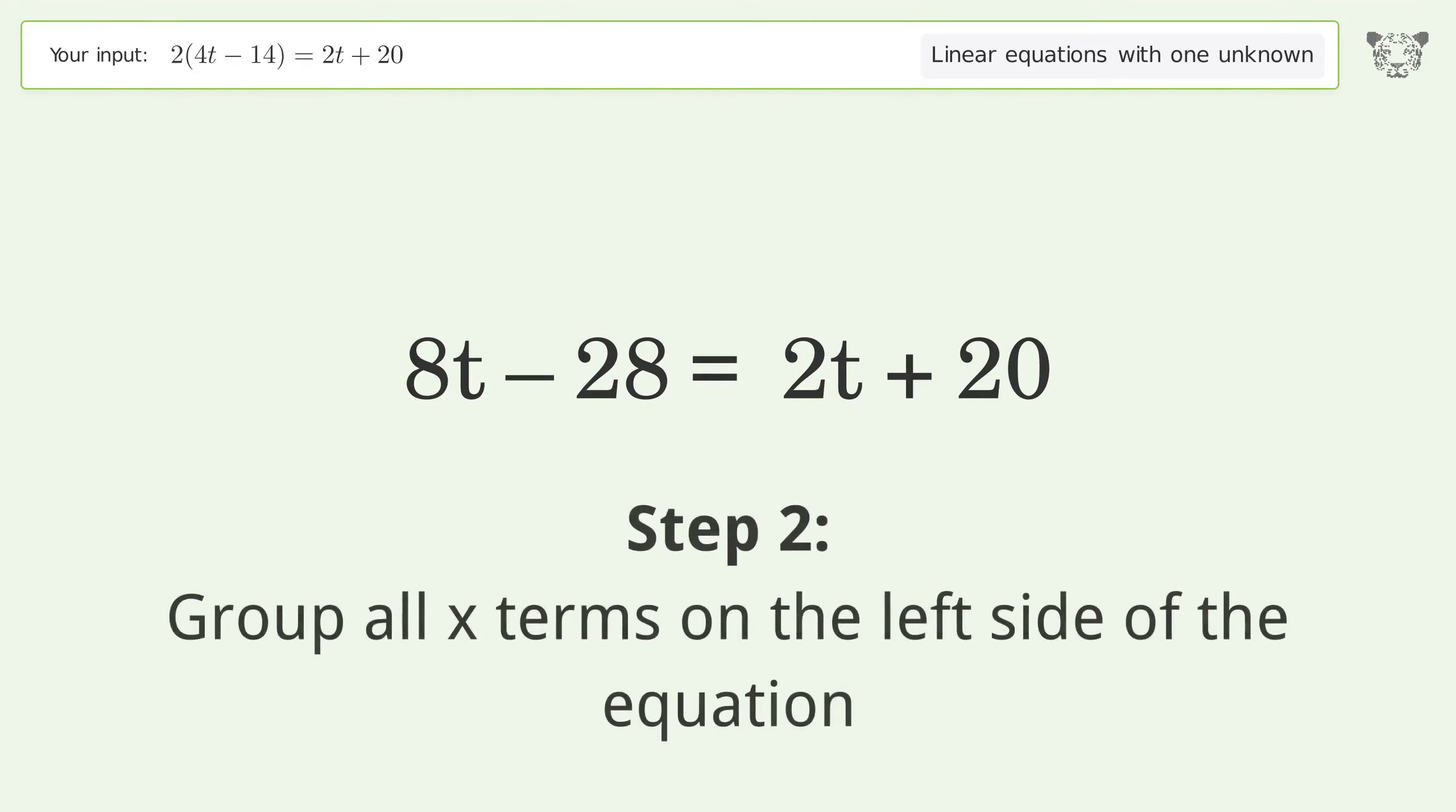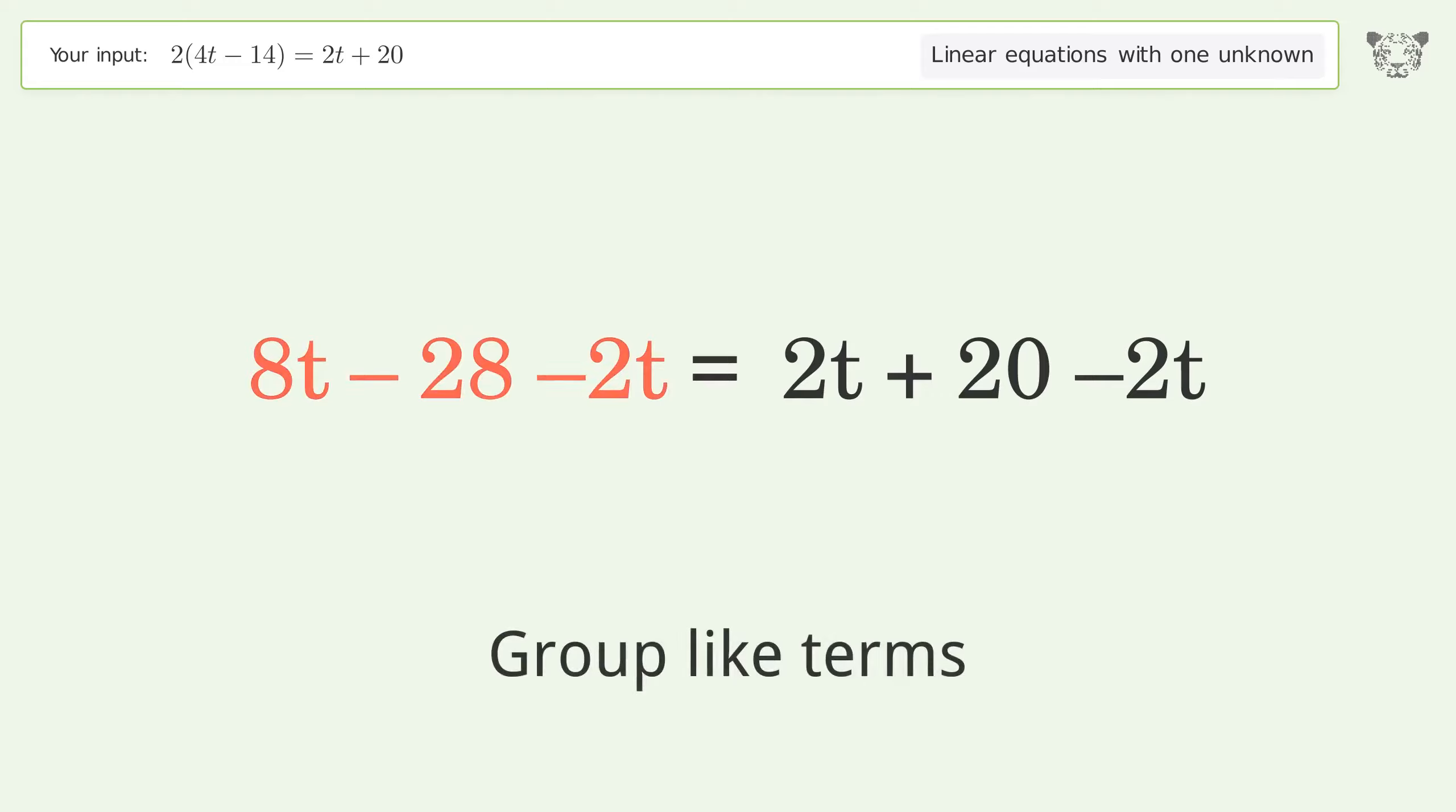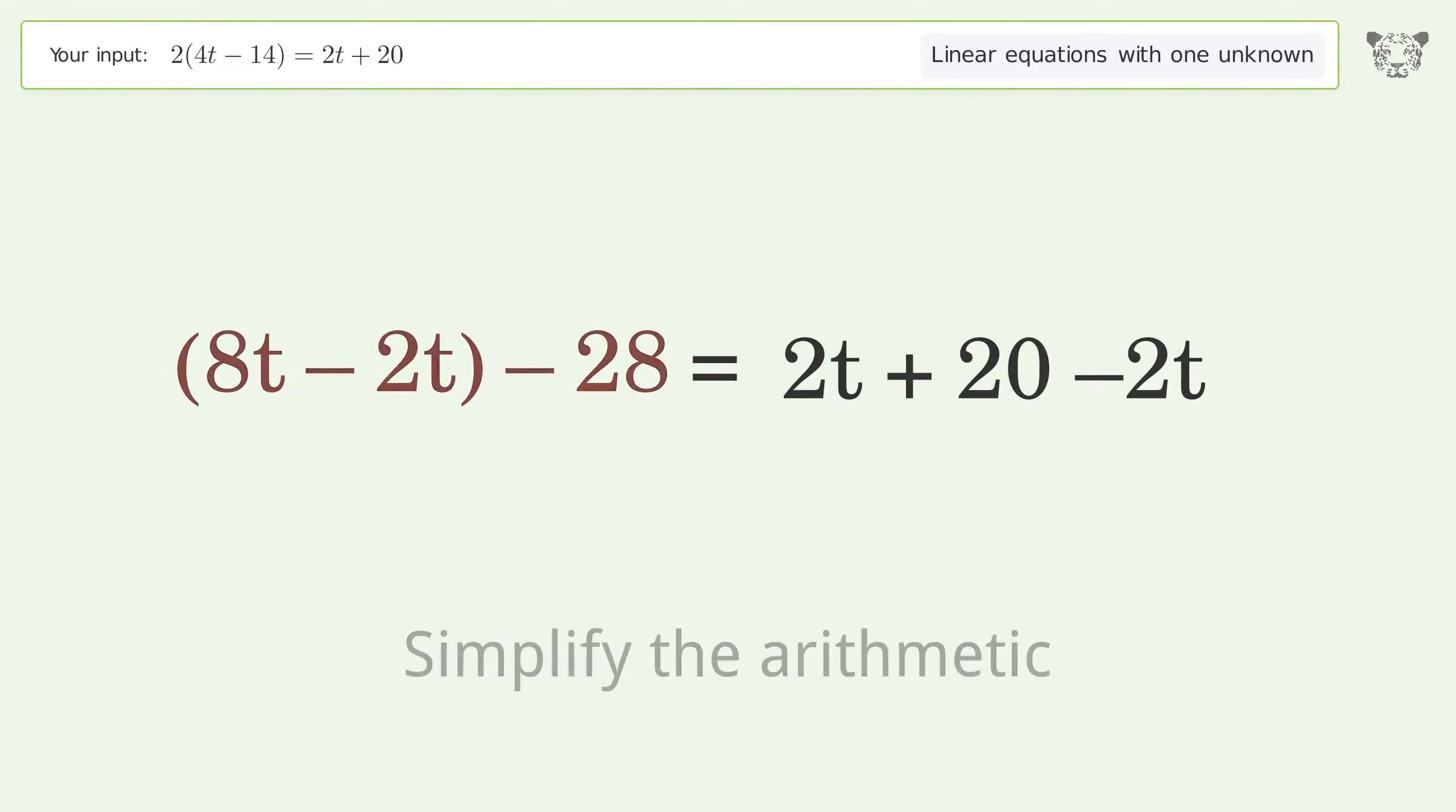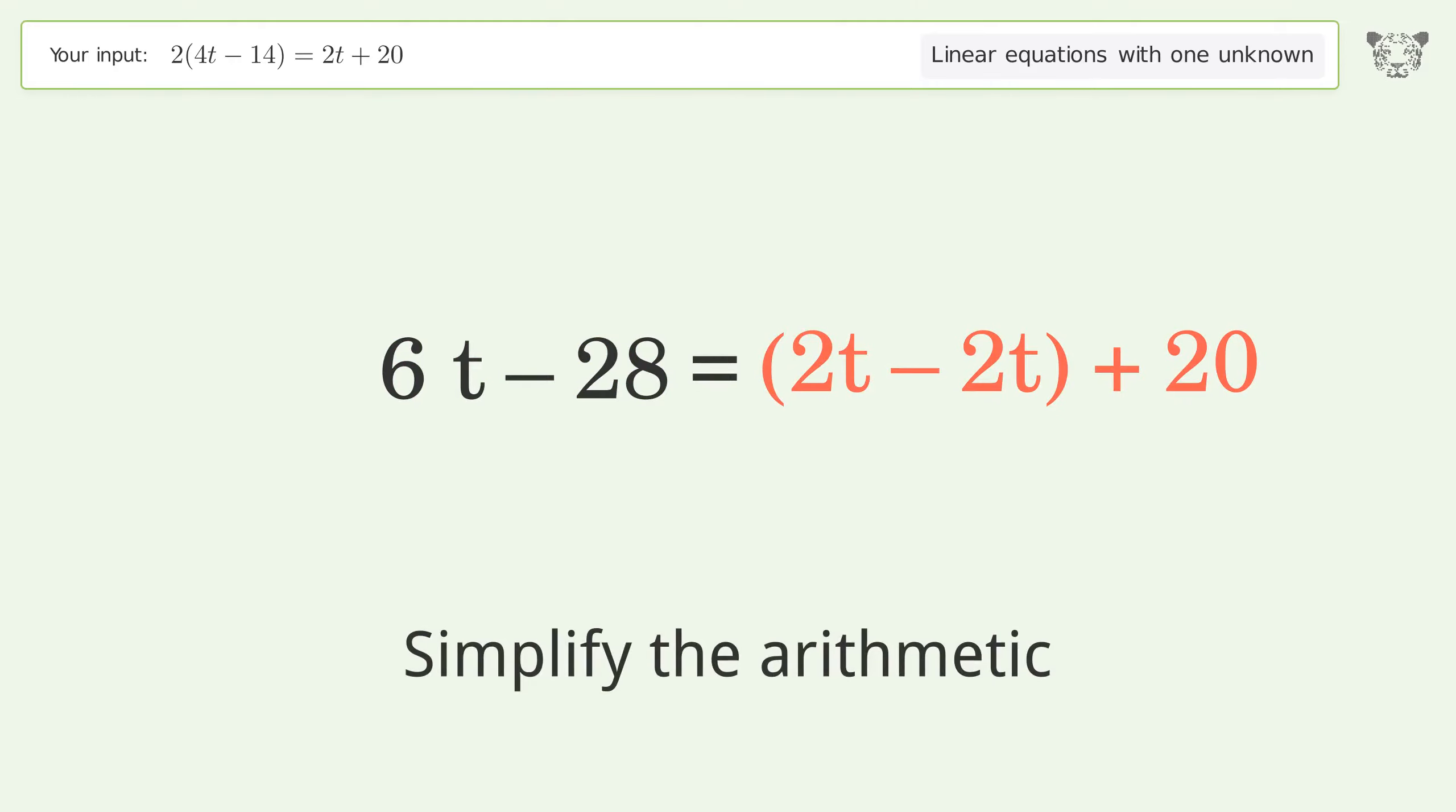Group all x terms on the left side of the equation. Subtract 2t from both sides. Group like terms. Simplify the arithmetic. Group like terms. Simplify the arithmetic.